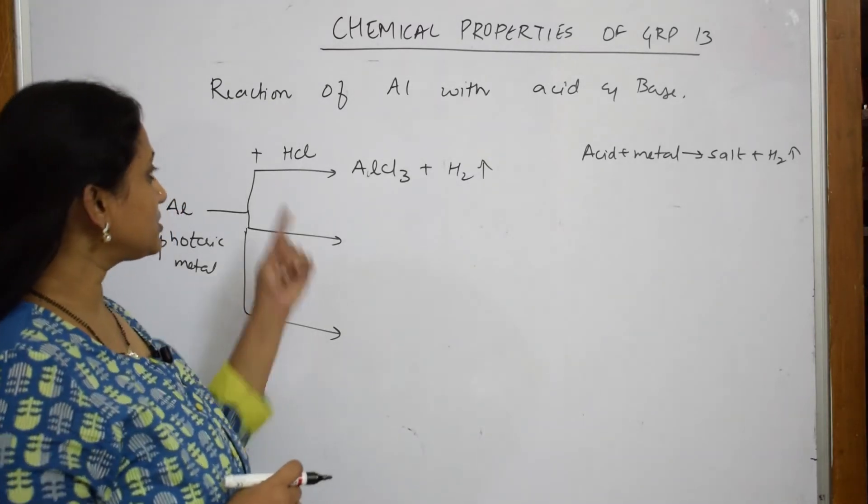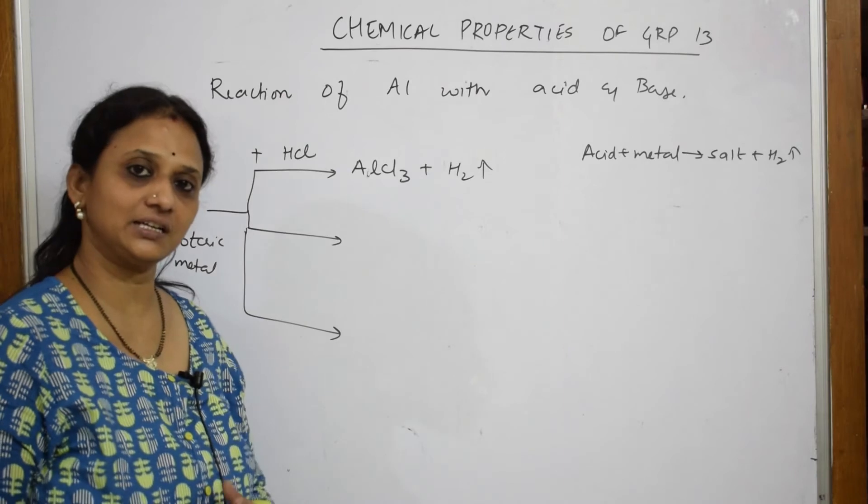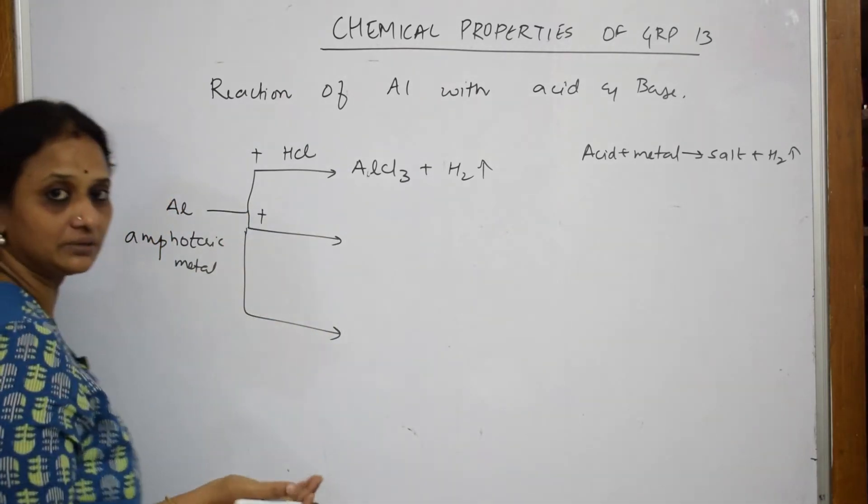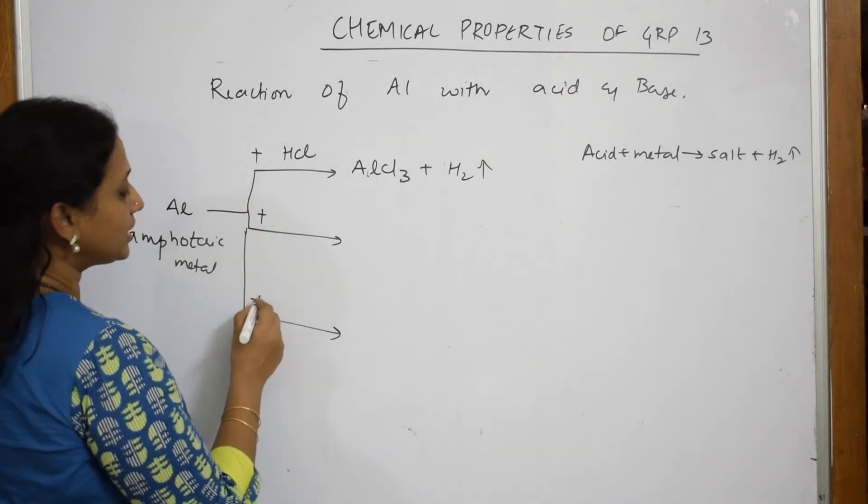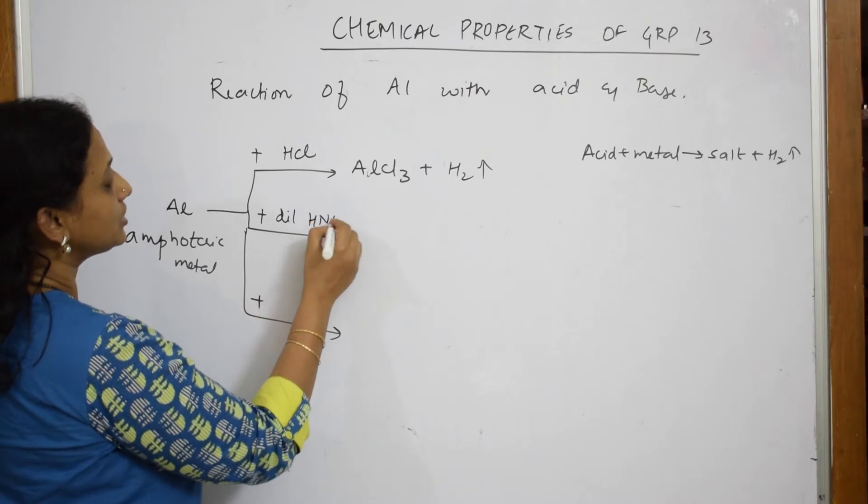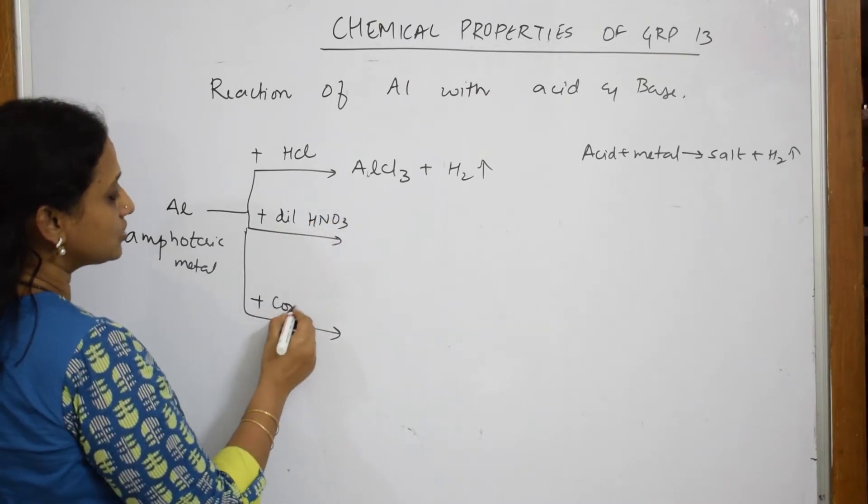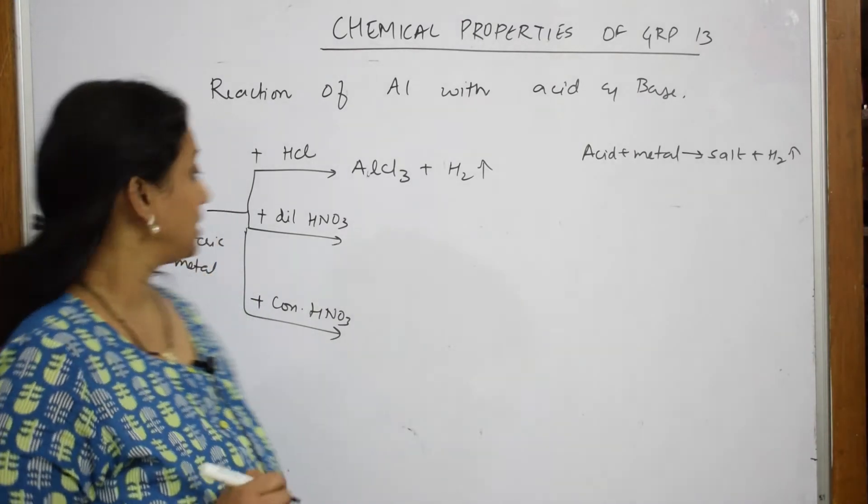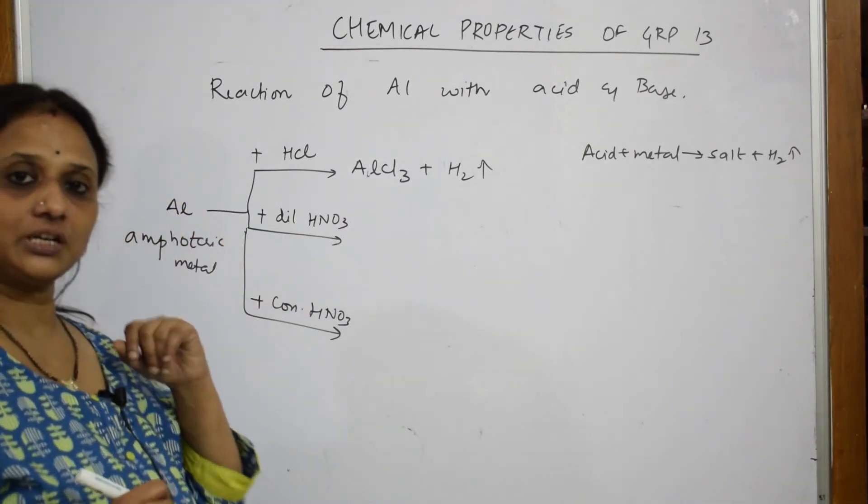Now, suppose if I take dilute HCl, then done, fine. Suppose if I take HNO3. Remember, two conditions you have to remember in HNO3. First condition: if you are taking dilute HNO3, what will happen? If you are taking concentrated HNO3, what is going to happen? This is important for your exam.